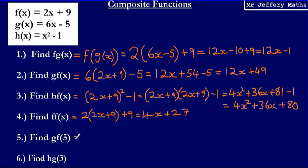On to question 5. There are two different ways we could work this out. We could take the number 5 and substitute it into the g of f of x we worked out earlier — so into 12x plus 49 — giving 12 times 5 for 60, add on 49 for an answer of 109. Alternatively, we substitute 5 into f(x) first, then substitute that answer into g(x). We'll use that second method.